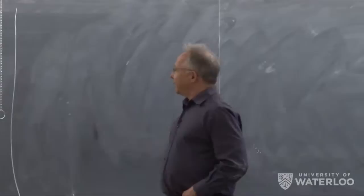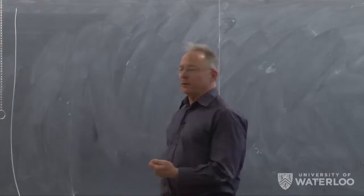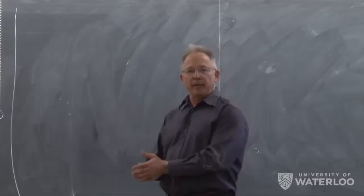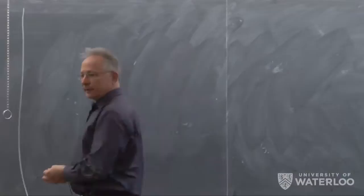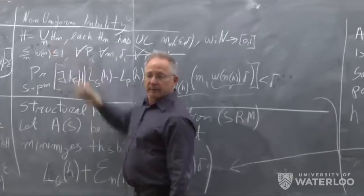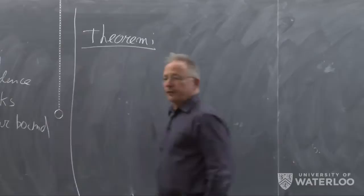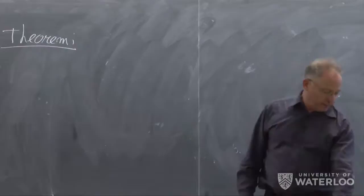The next claim to show is why this is a good algorithm. Formally, there is a theorem that tells us: with this algorithm, every class which is a union of finite VC classes is non-uniformly learnable. So this theorem proves that every union of H_Ns like this is non-uniformly learnable.